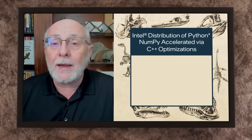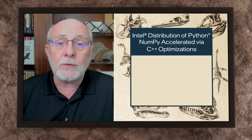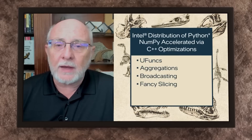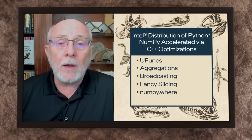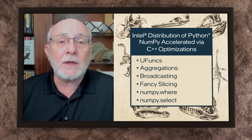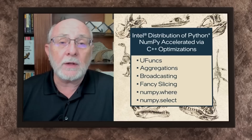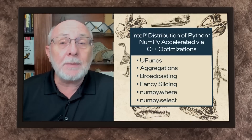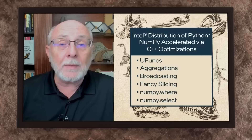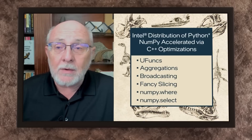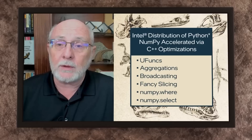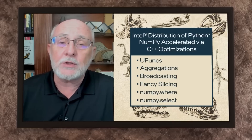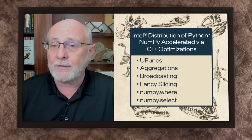If you're wise with your use of NumPy — using ufuncs, aggregations, broadcasting, fancy slicing, and the NumPy WHERE and NumPy SELECT clauses — you can replace inefficient Python loops with these accelerated alternatives as function calls. This typically makes code more readable, more maintainable, faster now, and faster for future hardware releases. This is the closest thing to getting a free lunch you might find in software development.